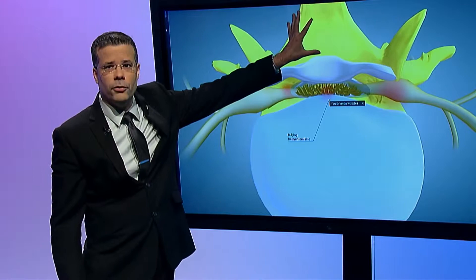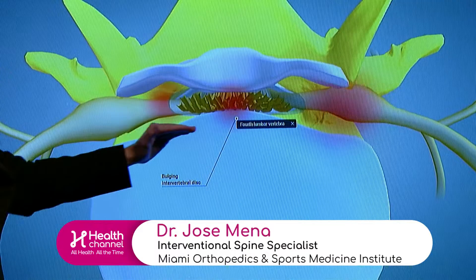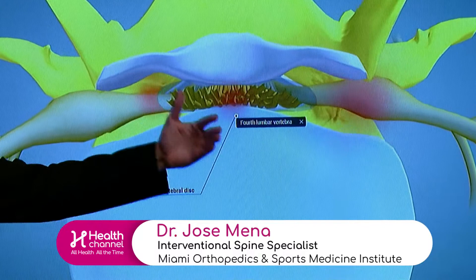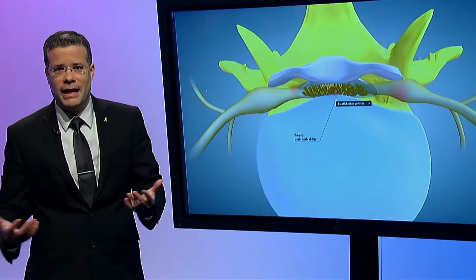The disc is supposed to be within the bone itself, sitting on top of the bone. When the disc starts slipping out from that bone, that's what we call a herniated disc or a bulging disc. A bulging disc doesn't cause pain — it's more of a lax disc that happens as we age.